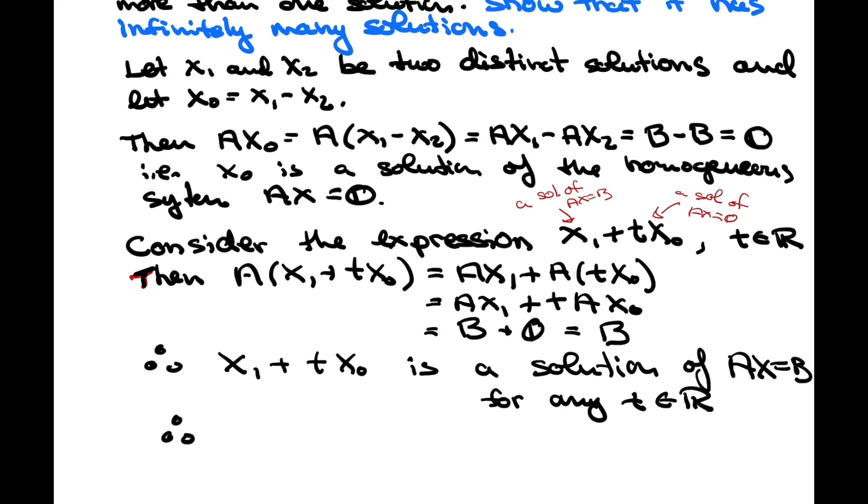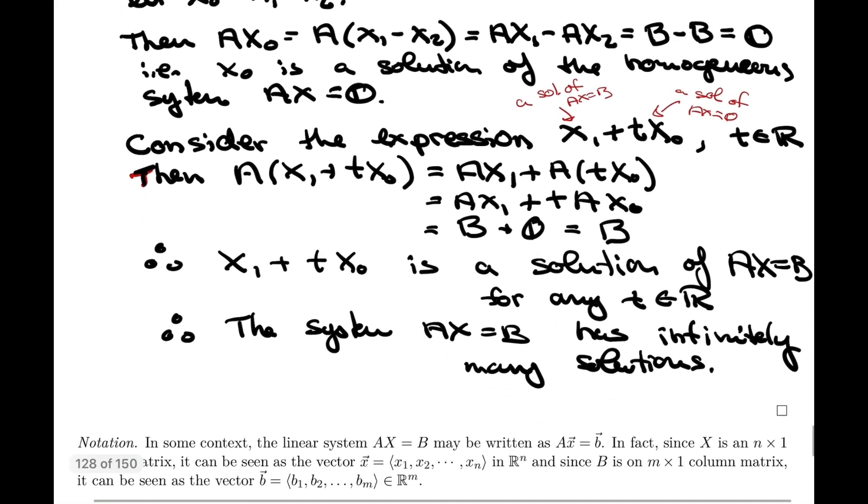right? Because you can give T any value like, and therefore, the system AX equals B has infinitely, infinitely many solutions. And that is exactly what we wanted to prove.